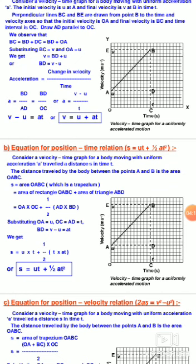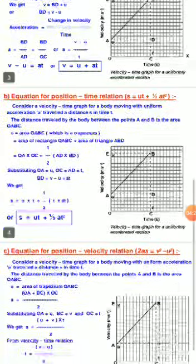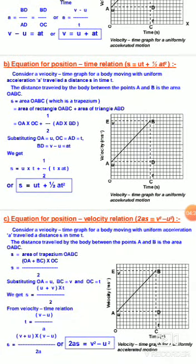This is the velocity-time graph for uniform acceleration motion. Third equation for position-velocity relation: 2as equals v squared minus u squared. Consider a velocity-time graph for a body moving with uniform acceleration. It travels distance s in time t. The distance traveled by the body between points A and B is the area OABC — area of trapezium OABC equals OA plus BC, times OC divided by 2.